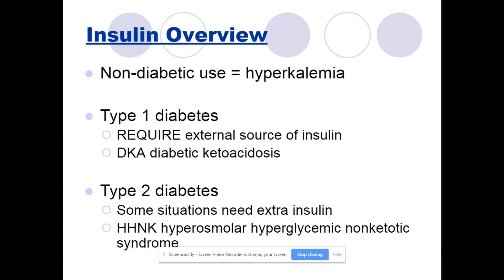For type 2 diabetes, some patients become insulin resistant and need more insulin than they can possibly produce, which is why you would give them insulin. They also have an emergency situation called HHNK, or hyperosmolar hyperglycemic non-ketotic syndrome, and during this situation you would also give them insulin.